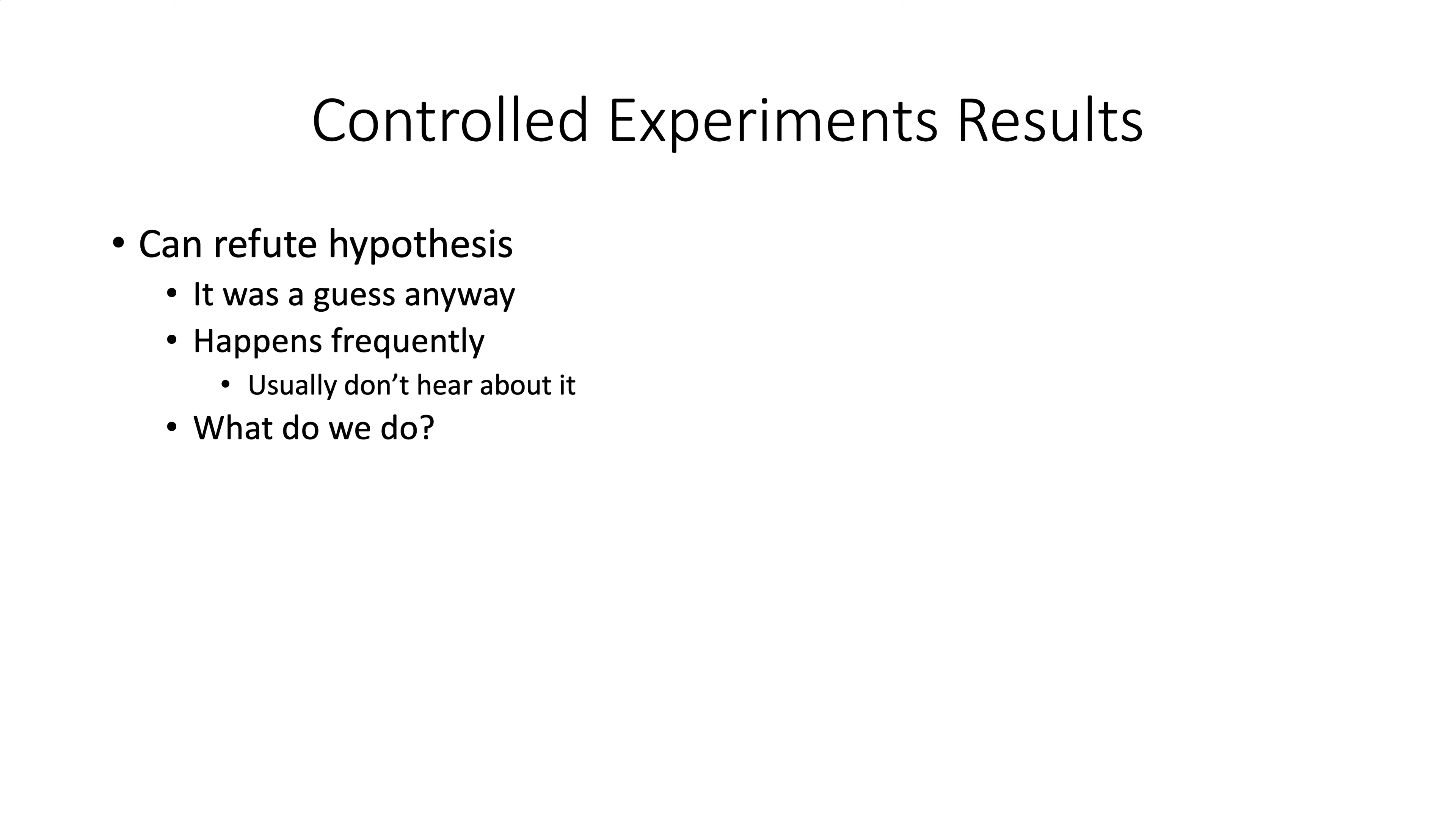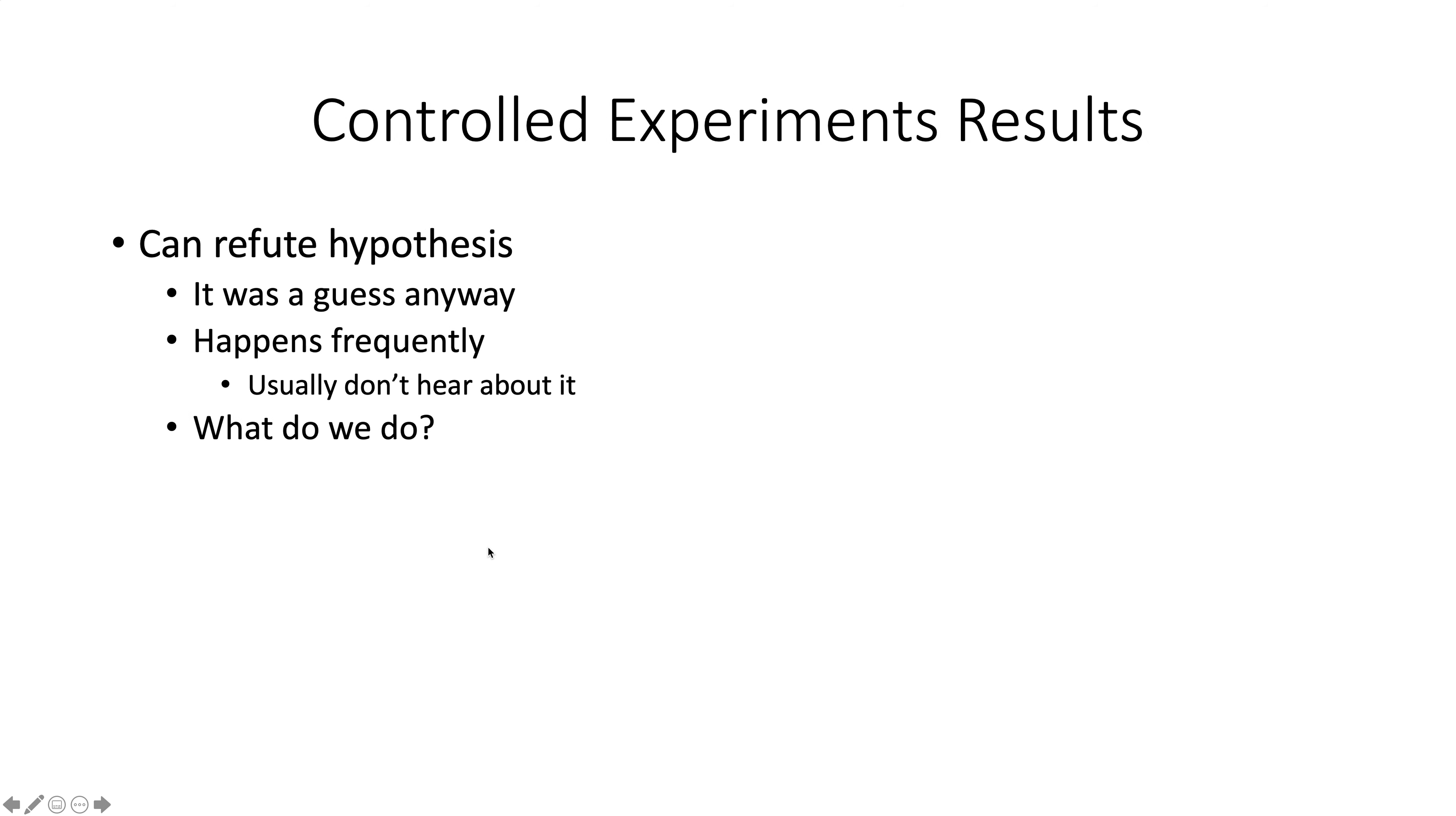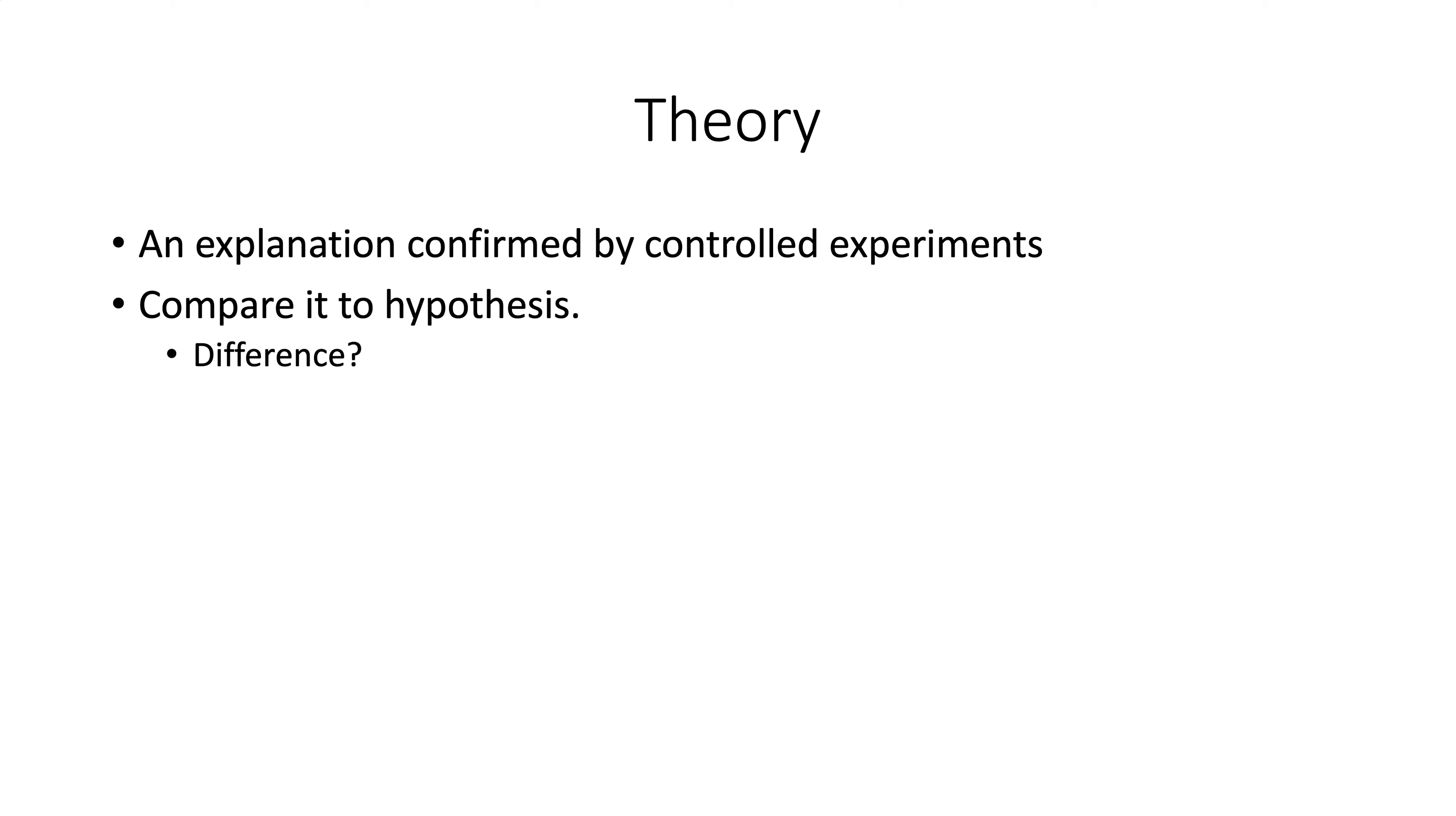What do we do if it tells us our hypothesis is wrong? We guess again. We made one guess. Let's try something else. We can back up here. None of the three things I worked with were sweet, so now I'm going to guess maybe it's combinations. You can also tell us we're right. If it confirms a hypothesis, now we have a theory. I'll talk about this. A theory is an explanation, but the difference between it and a hypothesis is a theory has data to back it up.